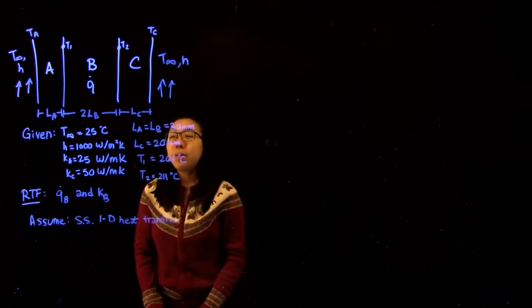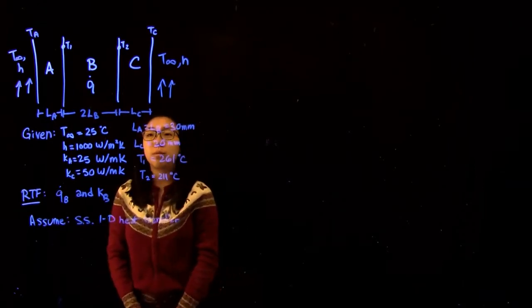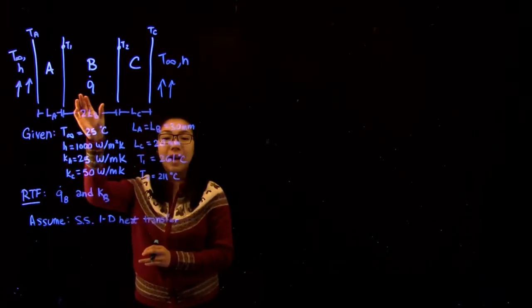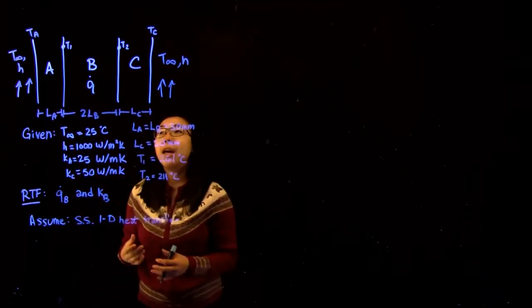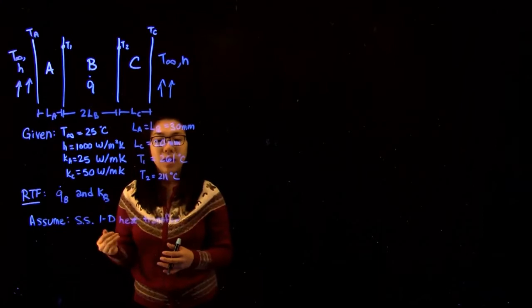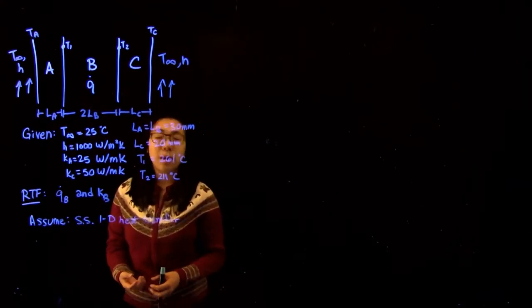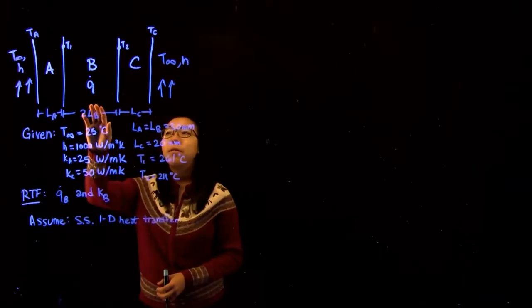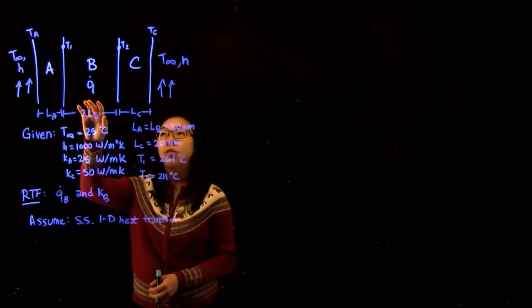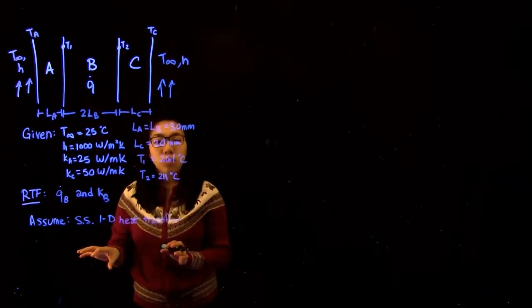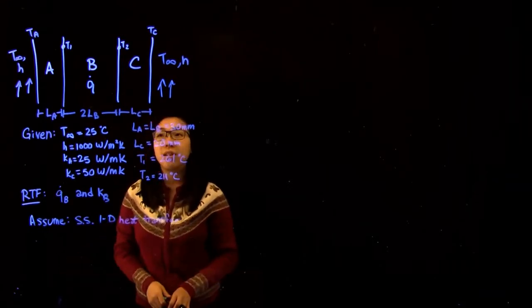The first thing we can do for questions like this is build the thermal circuit. You can see each of these regions as having effective resistances and the driving force that will determine the direction and the amount of heat transfer is the temperature difference. Because we have heat generation occurring in the central volume there's a break in the circuit so we're going to have to split this up into two circuits on different sides of wall B.